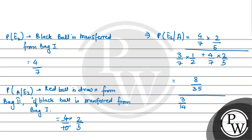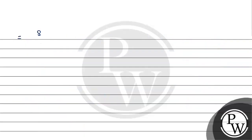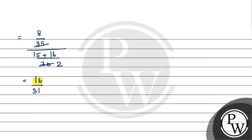Simplifying the denominator: 3 by 14 plus 8 by 35. Taking LCM as 70, we get 15 plus 16 equals 31 over 70. The numerator is 8 by 35. So the final answer is 16 upon 31.